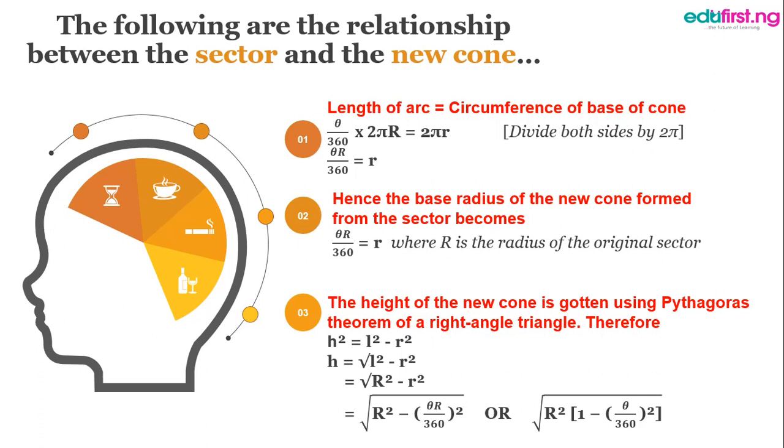But in this case, L is actually capital R, that is the radius of the sector. But now, in this case, it is now the slant height of the cone. So, that is why we have the square root of capital R squared minus small r squared.